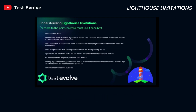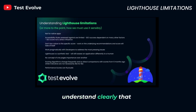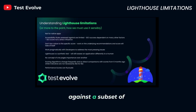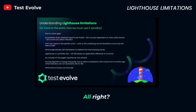When you look at your accessibility scores from Lighthouse, understand clearly that it is only scanning against a subset of rules. You can read online about those limitations, but be aware of that. On the SEO side, SEO success is going to be dependent on many, many other factors.